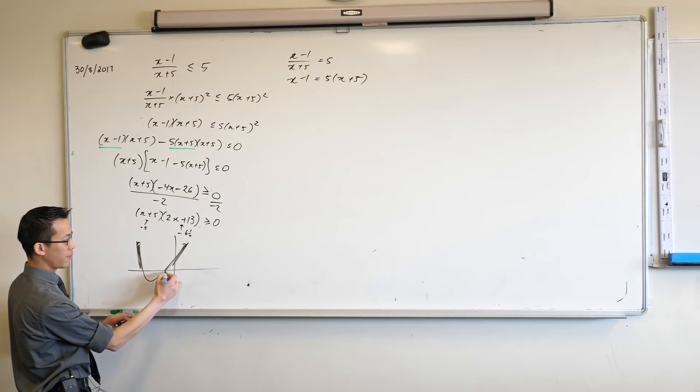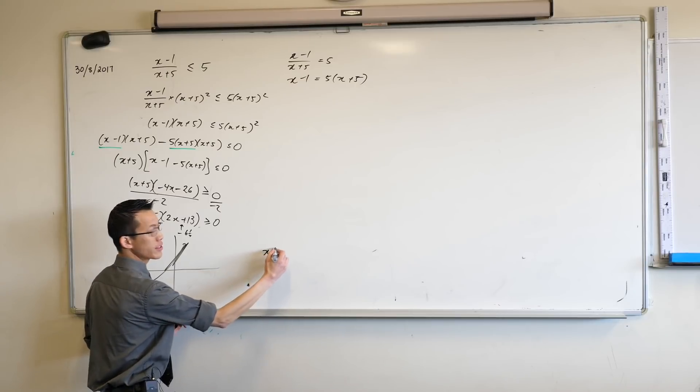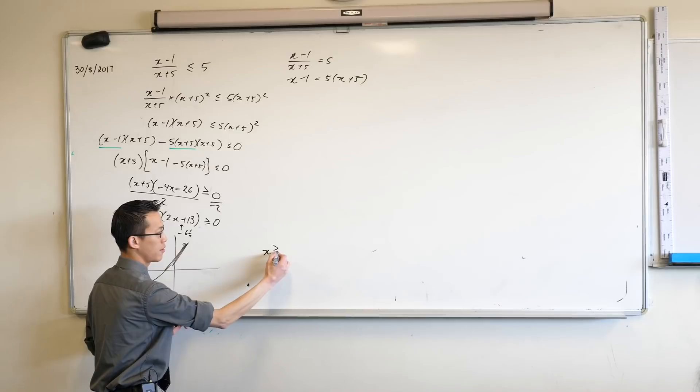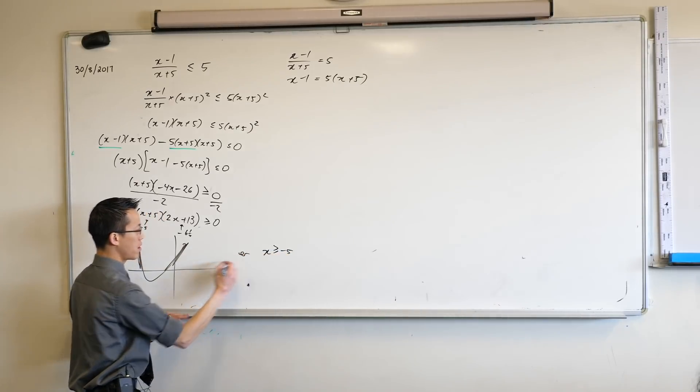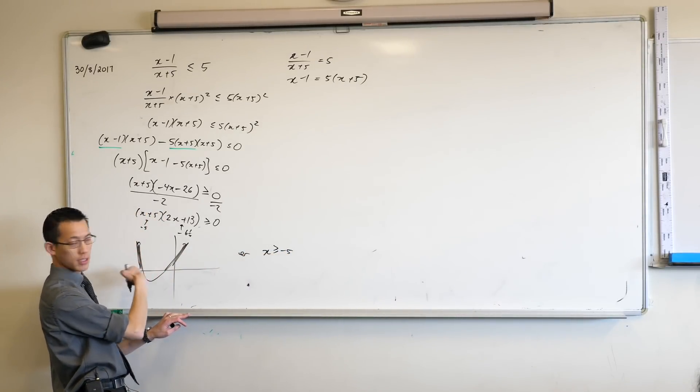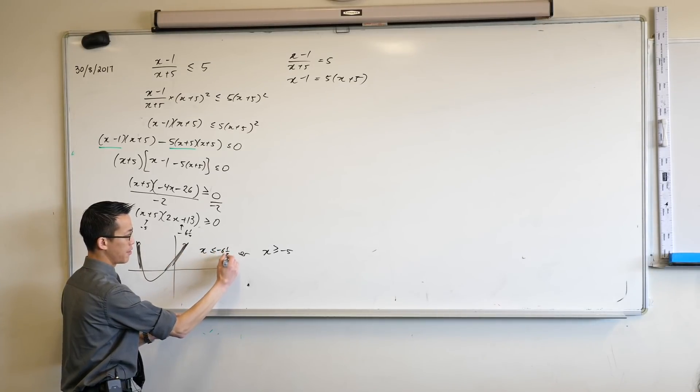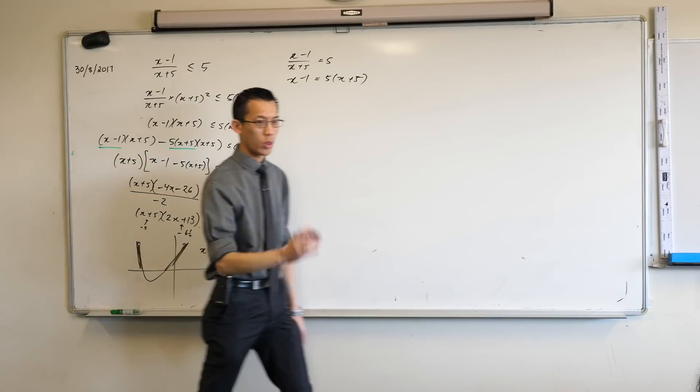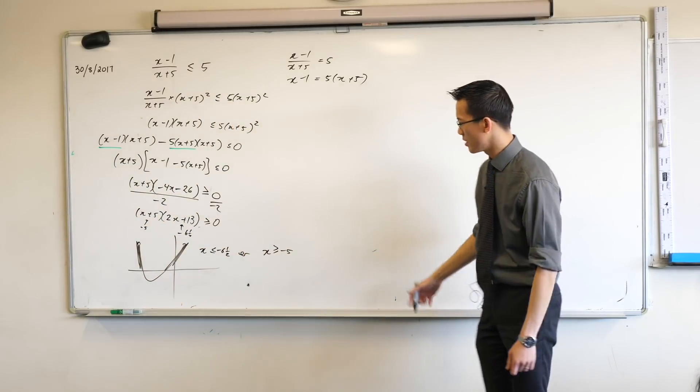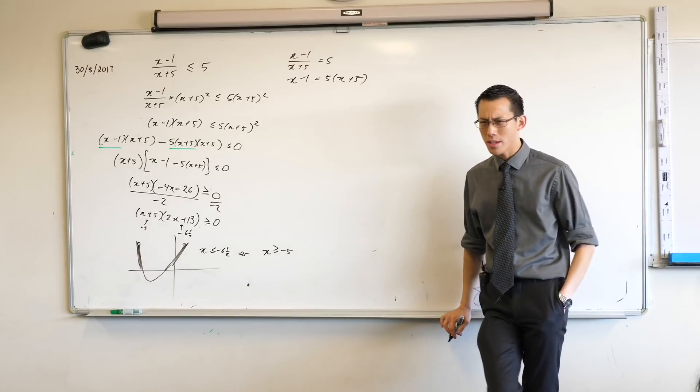So this one's negative 5, so I can say x is to the right of negative 5, or this one's to the left. That's negative 6 and a half. Now this should look familiar with one subtle difference. This is not the answer we got before. What was the answer we got before?